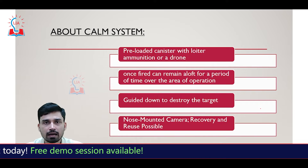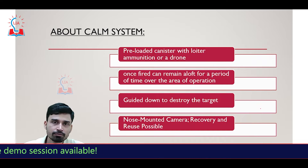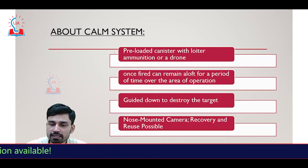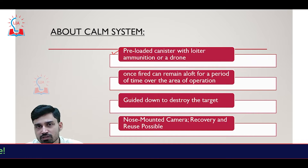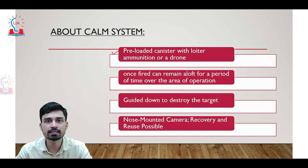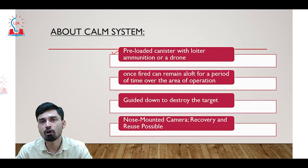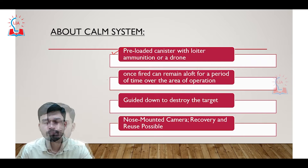So what is a CAM system? The first important feature of the CAM system is that it is a canister-based system. This means the ammunitions are pre-loaded into canisters, and when the need arises, the operator can fire these ammunitions, which can be launched at very fast intervals.